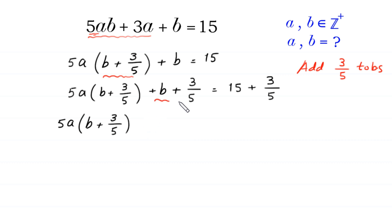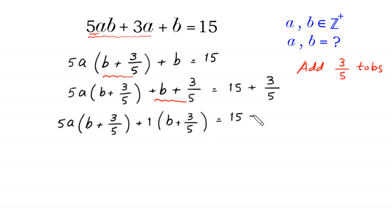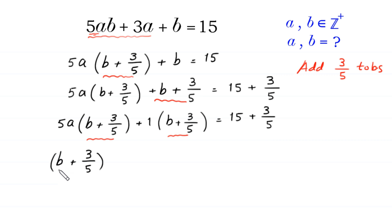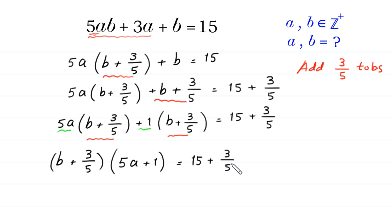Next, from the expression 5a times (b plus 3/5) plus (b plus 3/5), we can factor out plus 1, with (b plus 3/5) as a common factor. So we get (b plus 3/5) times (5a plus 1) is equal to 15 plus 3/5.